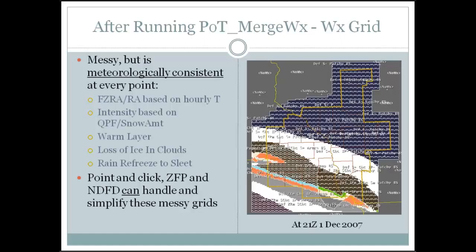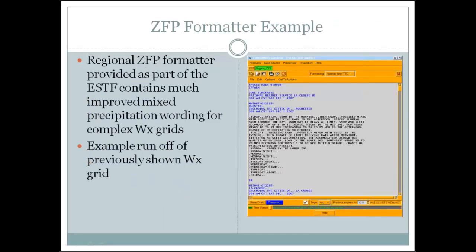From what I've seen going through mixed precipitation events — we had quite a few last spring so the methodology really got tested — point-and-click and the NDFD can handle these and actually simplify them quite a bit. Also, as part of the ESTF project, we updated the DFT formatter with extra wording to handle mixed precipitation events. Here's an example of what the regional DFT output would look like: 'Snow in the morning, then snow mixed with sleet and freezing rain in the afternoon.' Pretty easy — and this is run directly off that previous weather grid.